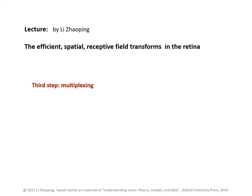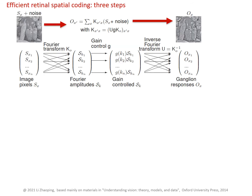Now let's look at the multiplexing stage in the efficient spatial coding. It is the third stage in the process: after the Fourier transform for the decorrelation stage K0, transforming spatial pixels to their Fourier components, and after the gain control stage G giving gk to each Fourier component, we will show that this multiplexing stage is the matrix U — the inverse Fourier transform K0 inverse.